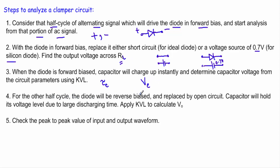In the other half cycle, the diode will be in reverse bias. Therefore, we replace the diode with an open circuit — that branch in which the diode is connected will be eliminated from the circuit. Since the capacitor holds the voltage Vc and has a high discharging time constant τ_D, we assume that the capacitor will store the voltage it achieved during the forward-biased half cycle, and retain that voltage during the other half cycle. I will then apply Kirchhoff's voltage law to calculate the output voltage.